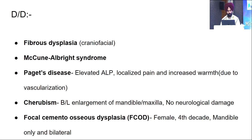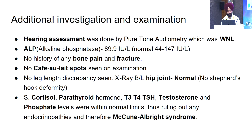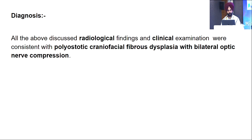My differentials were fibrous dysplasia of the craniofacial variety, McCune-Albright syndrome, Paget's disease, Cherubism, and focal cemento-osseous dysplasia. Additional investigations included hearing assessment using pure tone audiometry, which was within normal limits, indicating the eighth nerve was not affected. Alkaline phosphatase was within normal limits, ruling out Paget's disease. There was no history of bone pain or fracture, no café-au-lait spots, and no endocrinopathies as all hormone levels were normal, ruling out McCune-Albright syndrome. There was no Shepherd's crook deformity on X-ray of the hip joint, which is characteristic of fibrous dysplasia.